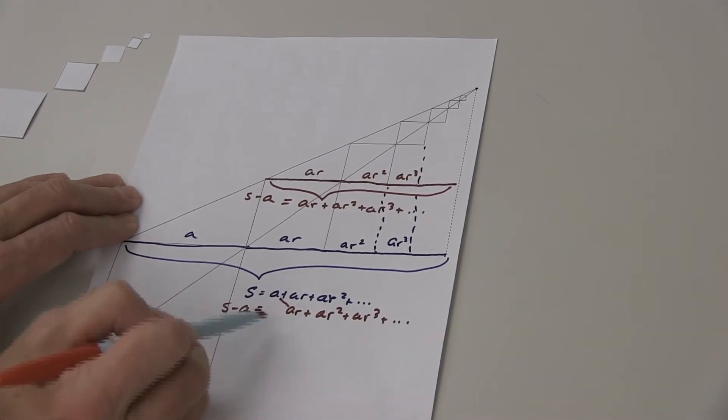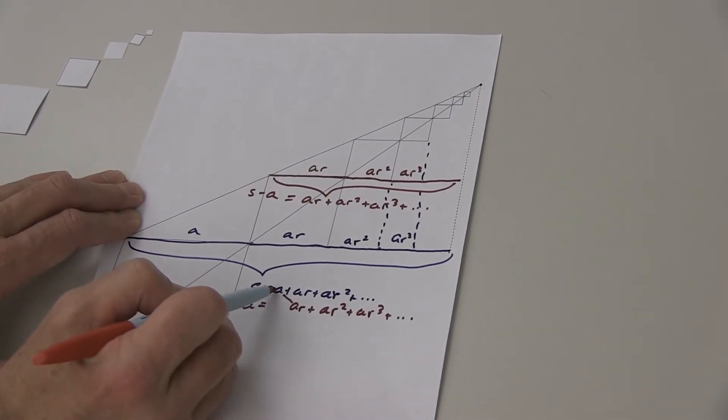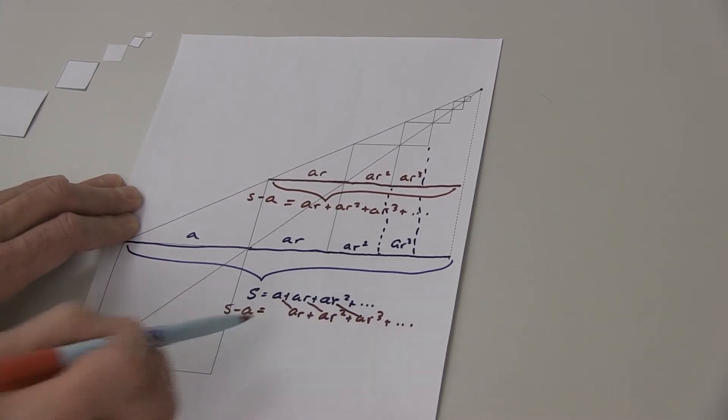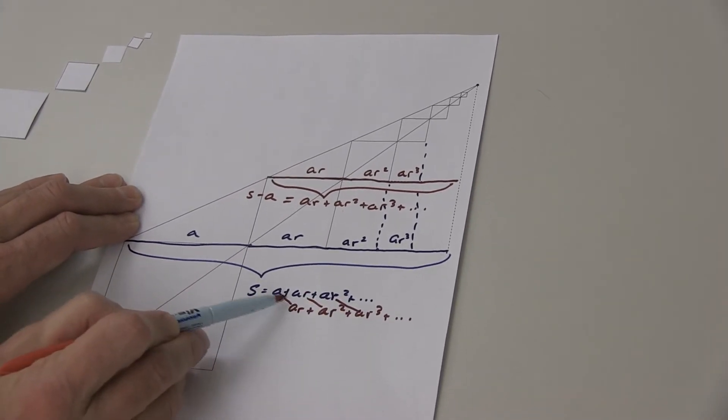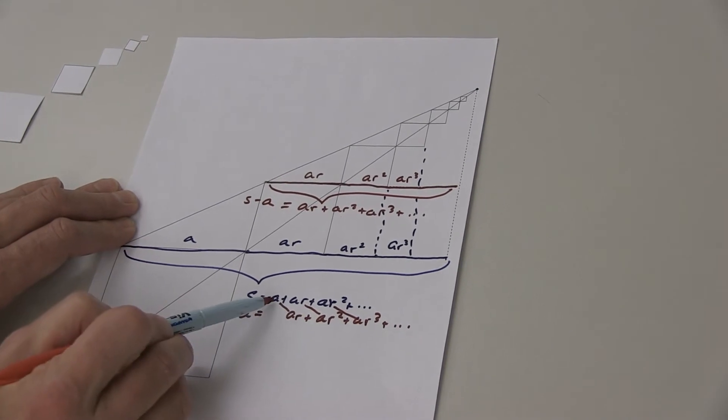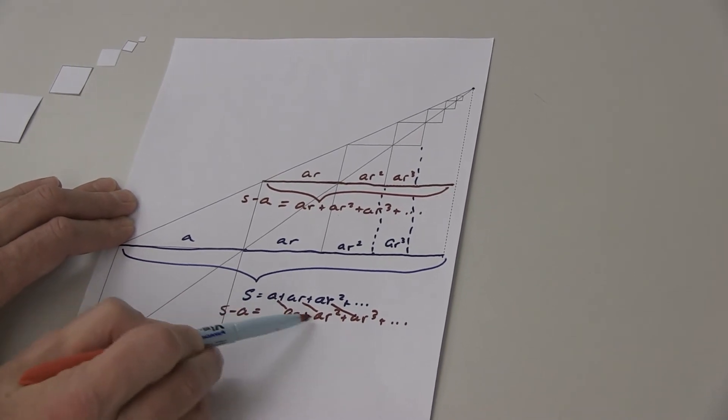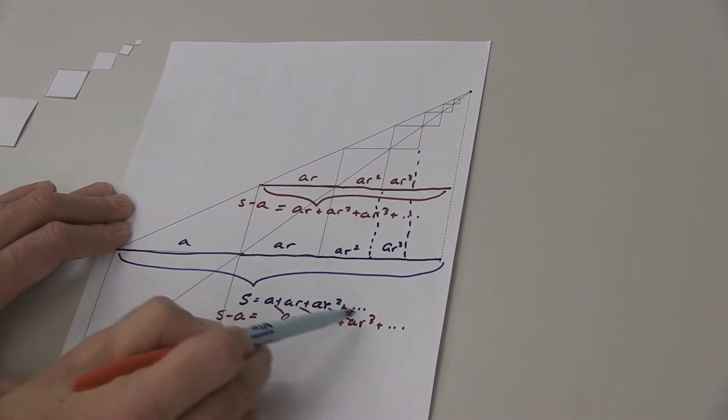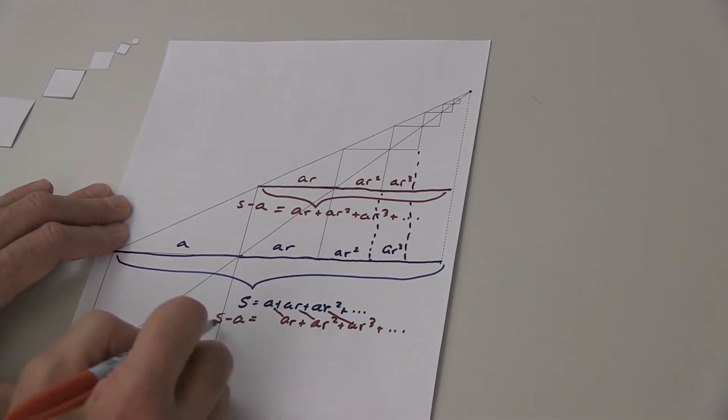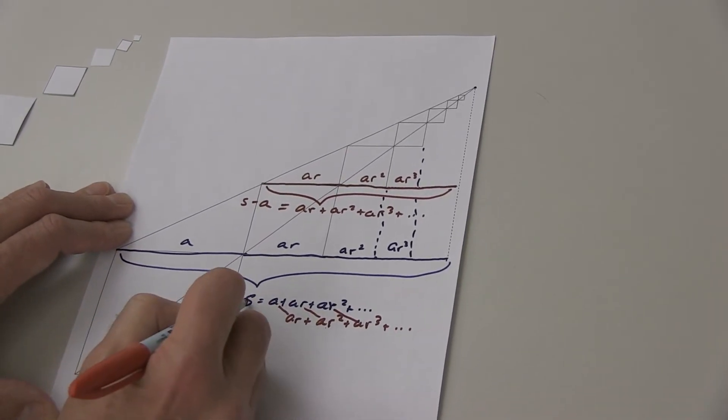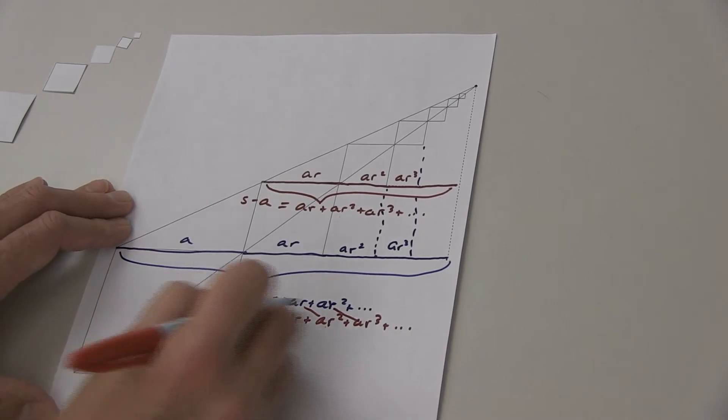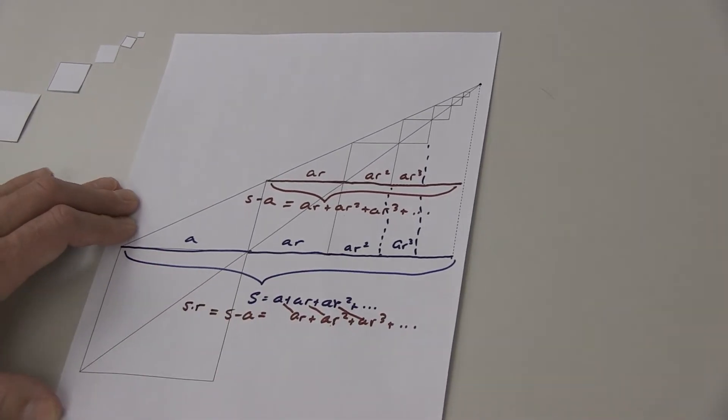Every term in S minus A matches with a term in S. And the difference between them is this one has an R in it. This one has a higher power of R in it. This one has one higher. You can see that S minus A, you can get there just by taking everything in S and multiply by R.